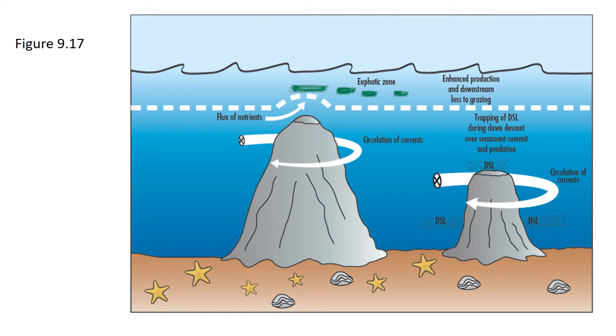What this results in is the formation of what are known as Taylor cones, and these lead to anti-cyclonic circulation and also can lead to isopyknol doming. We see the doming shown in the diagram of the taller of the two seamounts and the circulation patterns which set up around the flanks of the seamount.